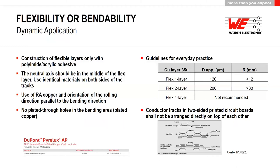Now back to the survey question. The DuPont Pyralux AP — the standard flex material — with typical 50-micron polyamide and 18 or 35-micron copper is specified by DuPont for 6,000 bending cycles. This means for every dynamic application, a specific qualification for the number of bending cycles is required.